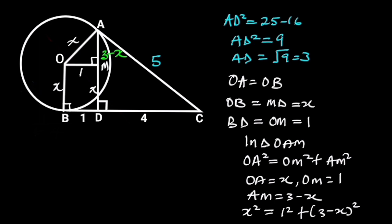If we expand 3 minus X squared, we will have X squared is equal to 1 plus 9 minus 6X plus X squared. X squared will cancel out X squared, and we are left with 6X is equal to 1 plus 9.